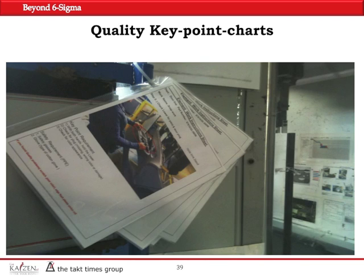And when you walk on the Toyota assembly lines, you can see that team members are equipped with pertinent pieces of information at all places. That's another very simple key point chart that you see for one particular operation.